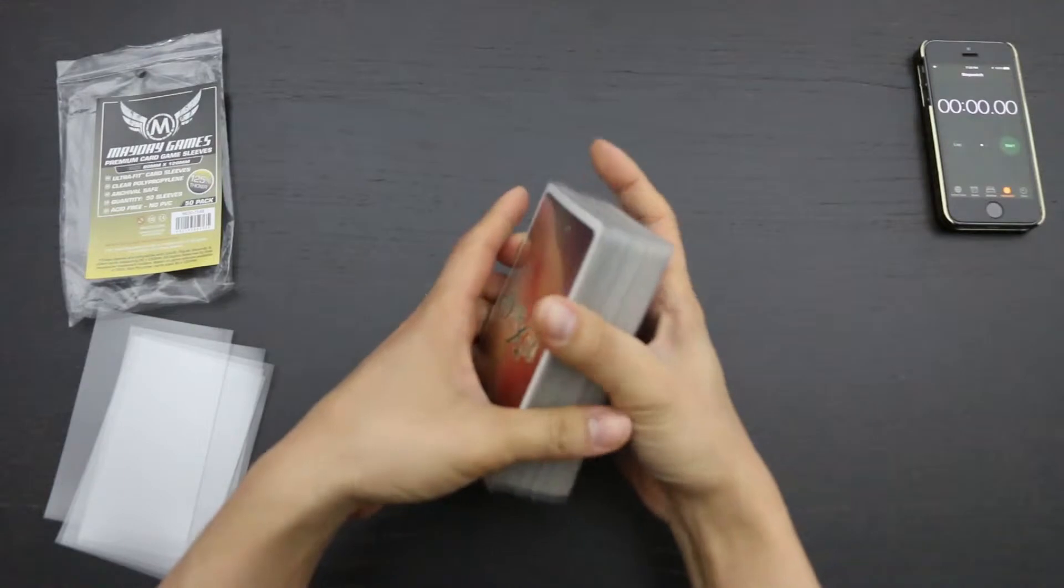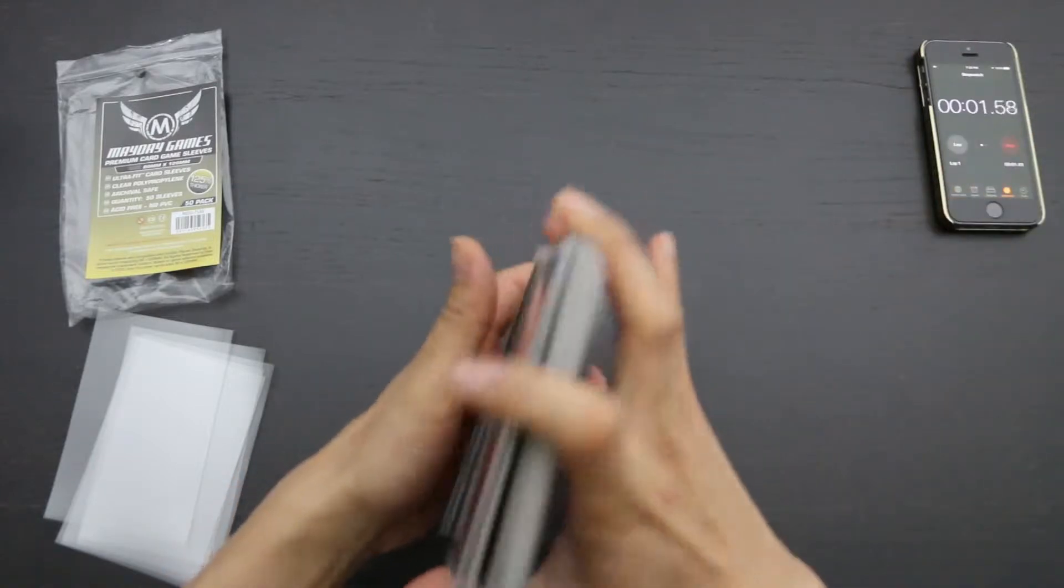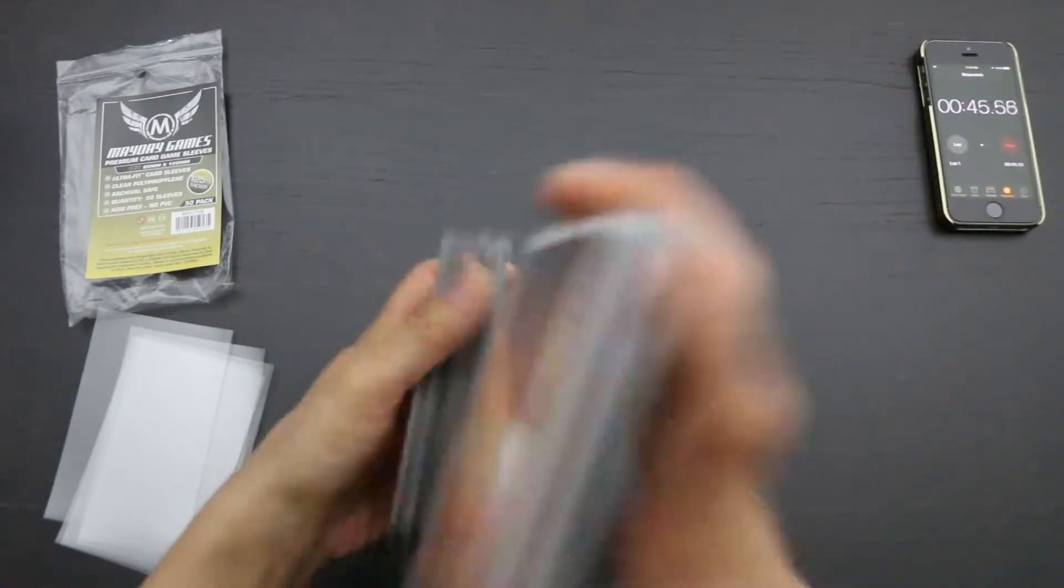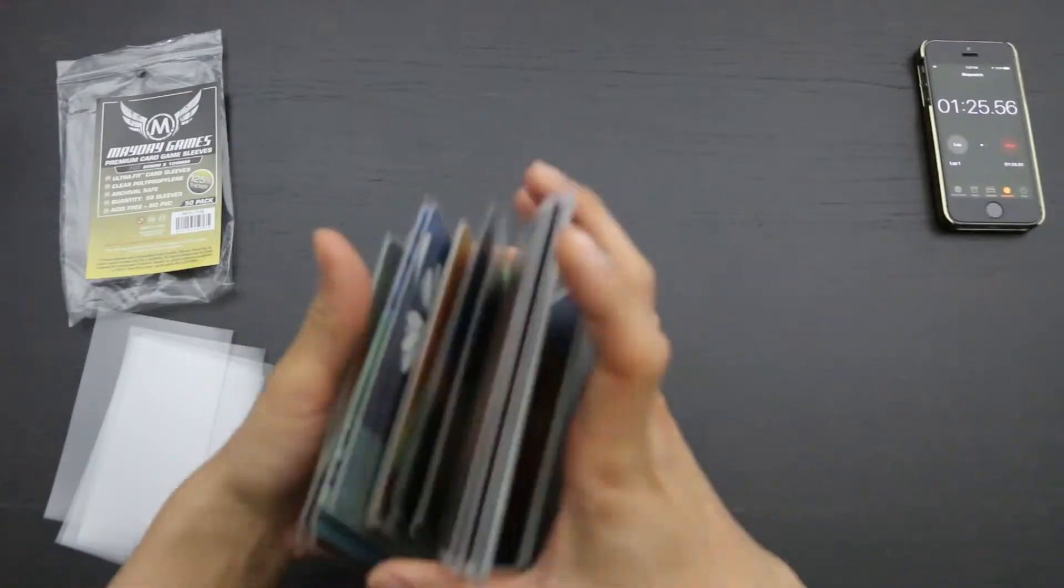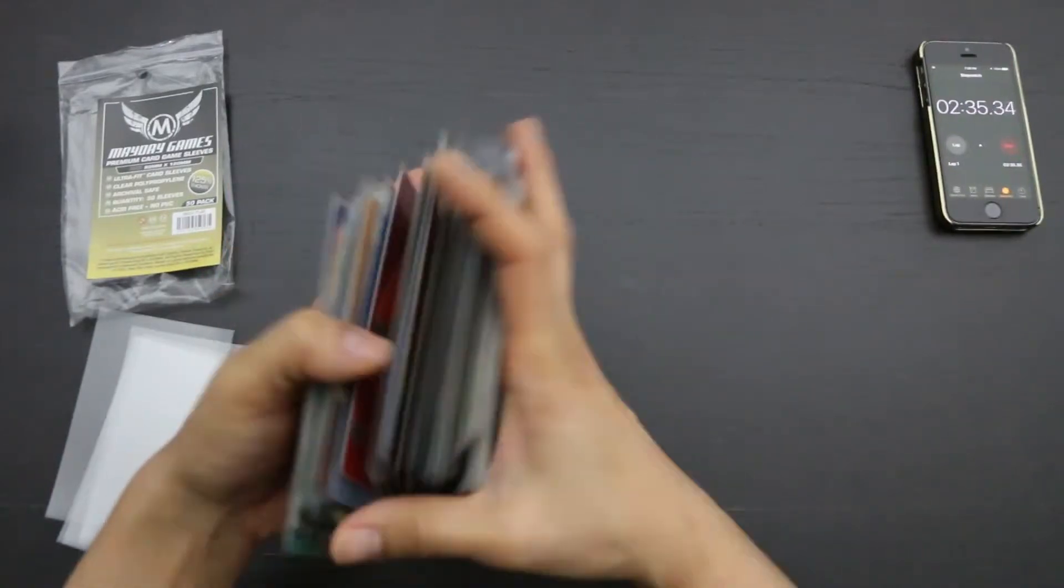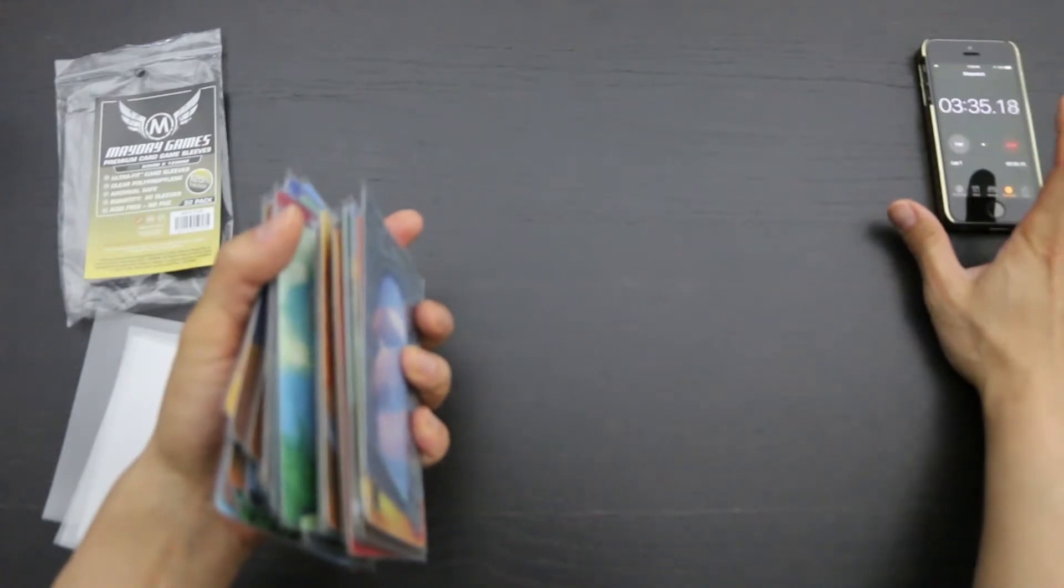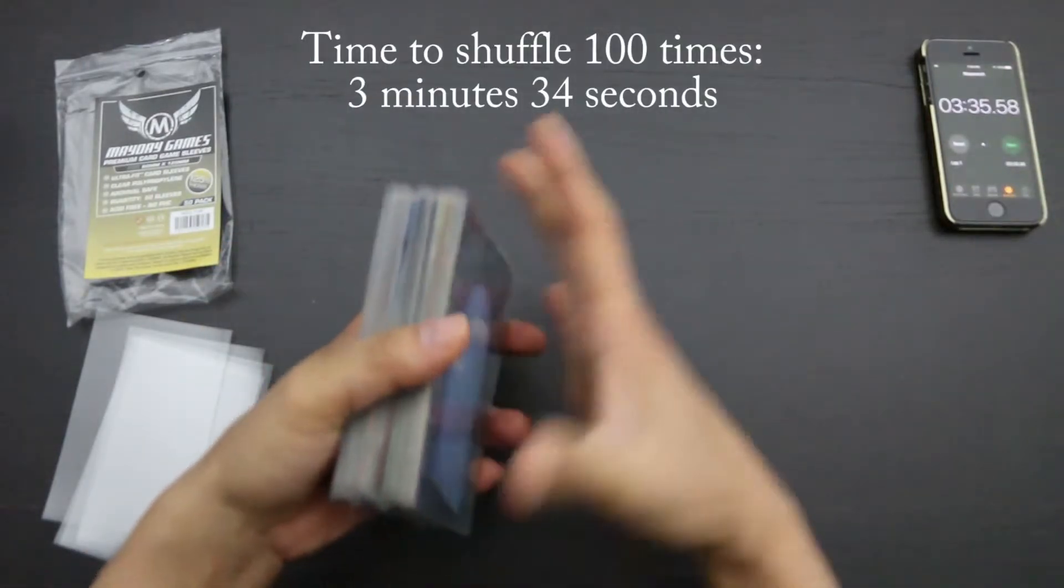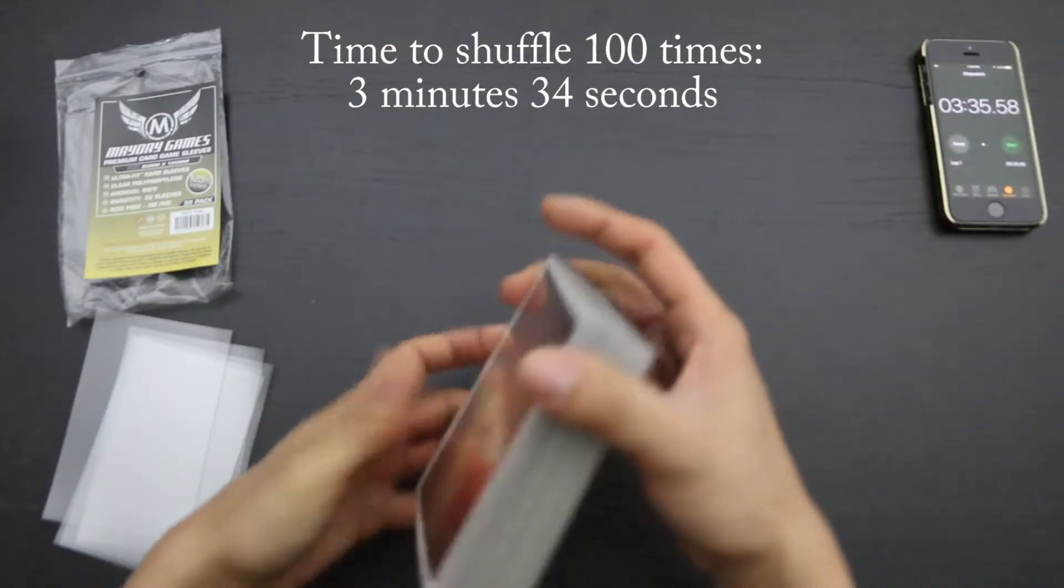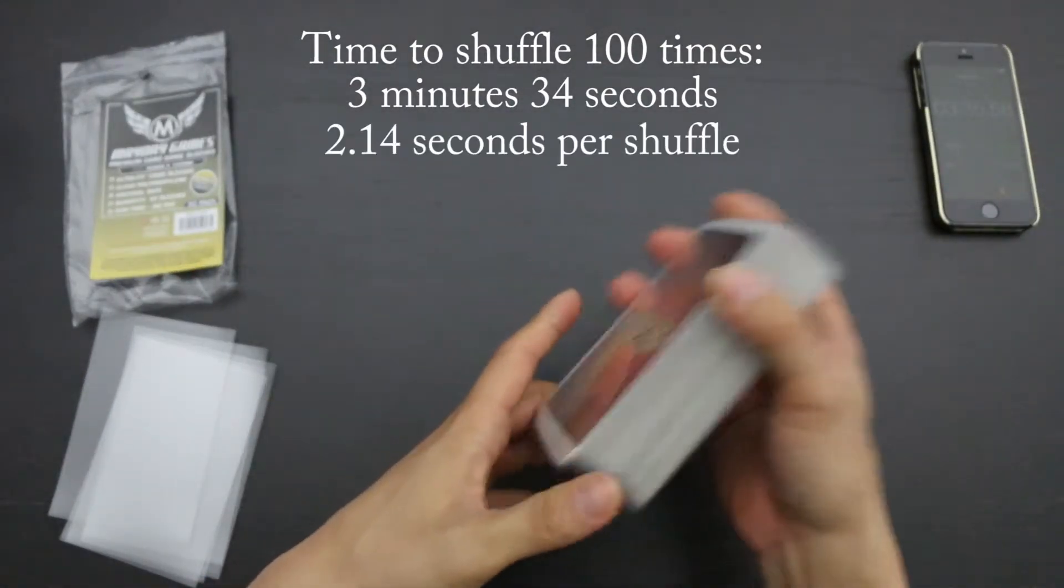For the shuffle test, I'm going to be shuffling this deck of cards 100 times and see how long it takes. Ready, set, go. Okay, it took 3 minutes and 34 seconds to shuffle these sleeved cards 100 times. There was a bit of a double tapping issue that I had with stopping the clock, so that's why the clock reads 3 minutes and 35 seconds. And that is a modest speed of 2.14 seconds per shuffle. It's not terribly fast, but it's not the slowest either.